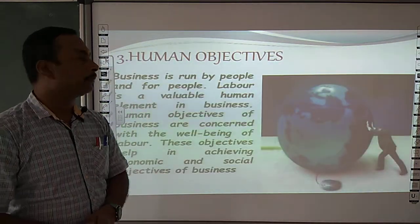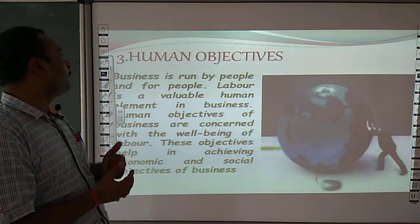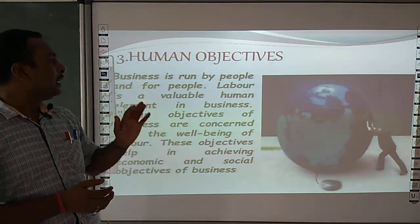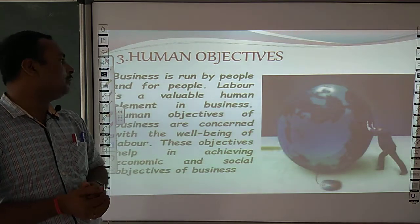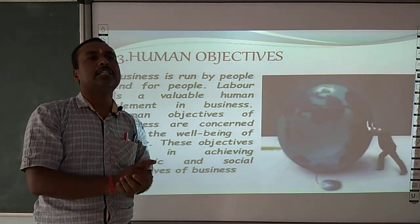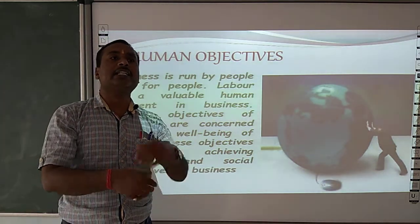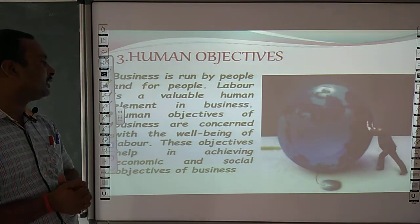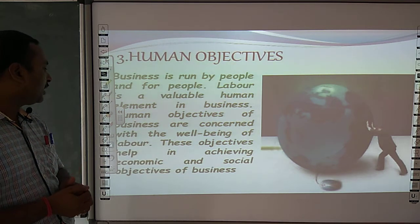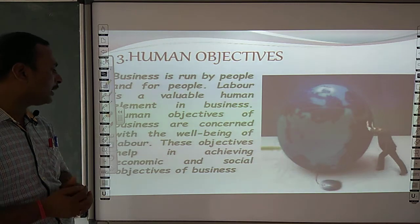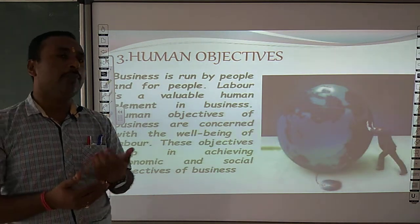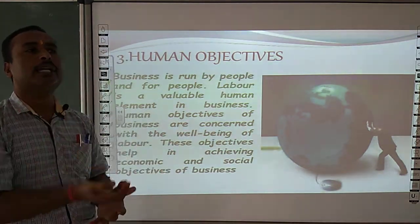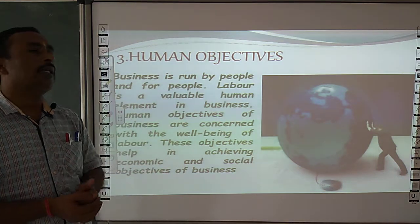Next is human objective. Business is run by the people and for the people. Human elements in business — joh labor hote hain, joh workers hote hain, joh kisi business organization ya company me work karte hain, woh company ke liye bahut valuable hote hain. Human objectives of business are concerned with the well-being of labor. These objectives help in achieving the economic and social objectives of business, aur yeh employees hi business organization ke goals ko achieve karne mein apna contribution dete hain, isliye human development hona zaroori hai.